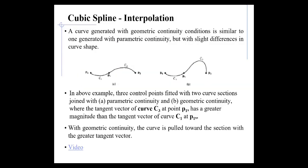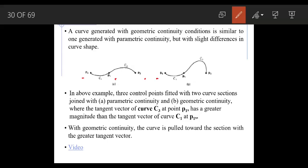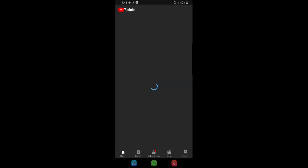A curve generated with geometric continuity is similar to one generated with parametric continuity, but with a slight difference in curve shape. In the diagram, curves C1, C2, and C3 show that when the tangent vector of C3 has greater magnitude than C1, the curve is pulled towards the section with the greater tangent vector, changing the overall shape.